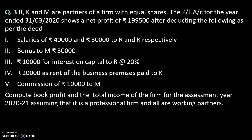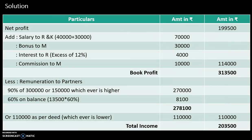We have working partners who are working partners. Now let's discuss it. Let's take a look at the net profit of Rs. 1,99,500. The net profit after adding back salary is Rs. 70,000.